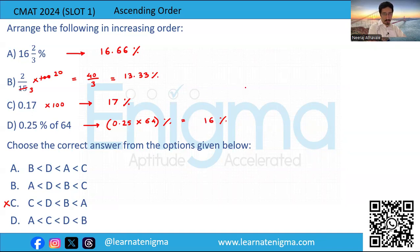Now we can see the smallest value is b (13.33%), then d (16%), then a (16.66%), then c (17%). So the answer is option a.